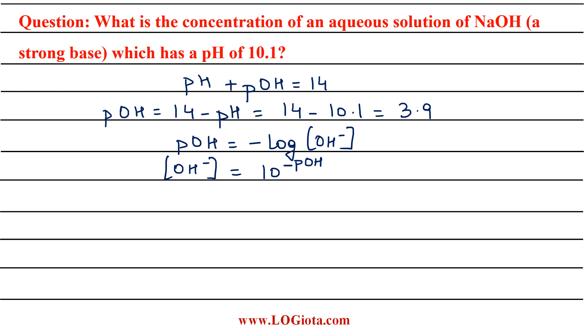Now we know the value of pOH, so we will put the value here, 10 raised to power minus 3.9. And on calculating this, we get the value as 1.26 times 10 to the power minus 4.